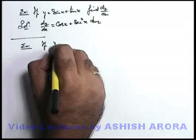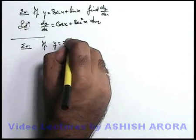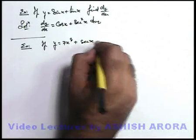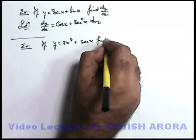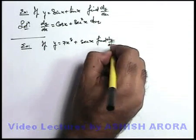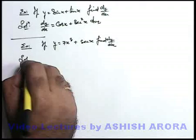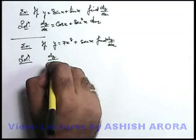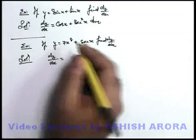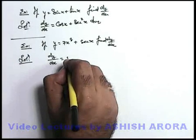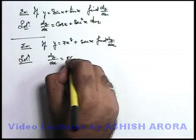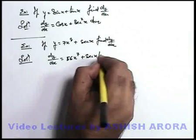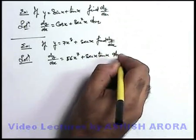Like if we are given with y = 7x⁸ + sec x and we are required to find dy/dx. In this situation, again we use the same relation. Here dy/dx is given as: 7x⁸ becomes 56x⁷, plus sec x differentiates to sec x tan x. This will be our answer.